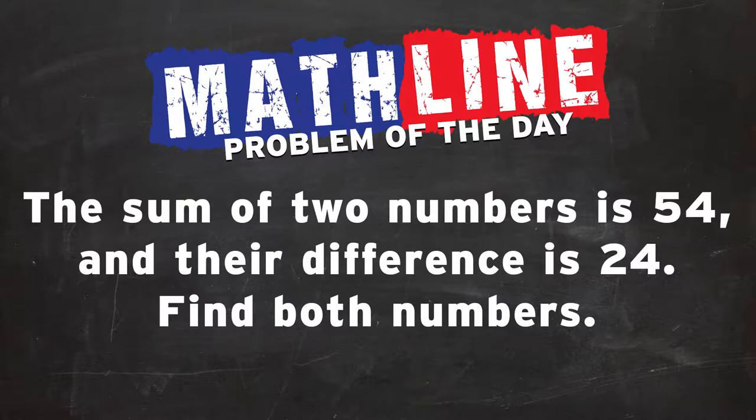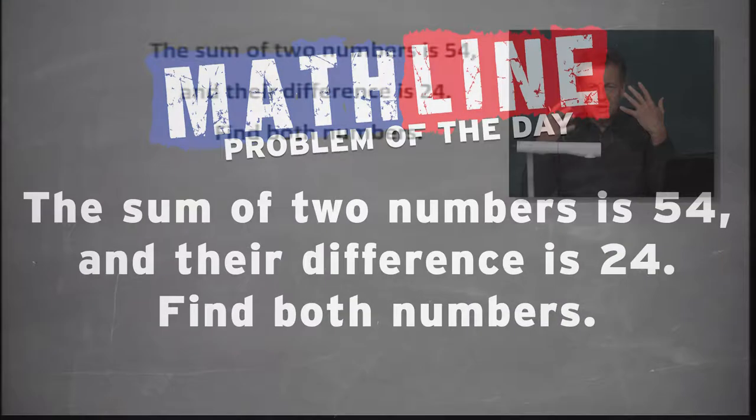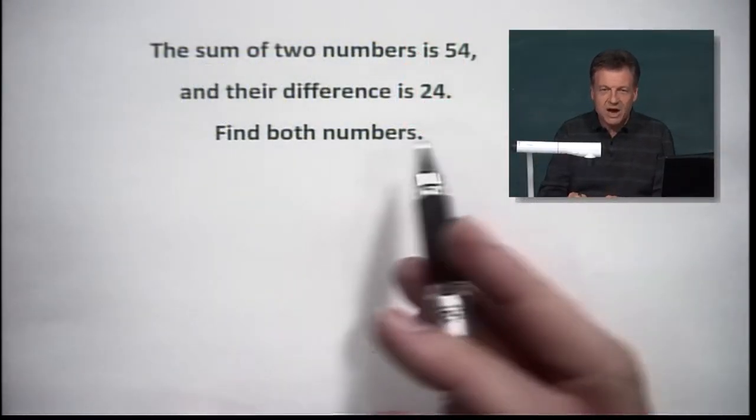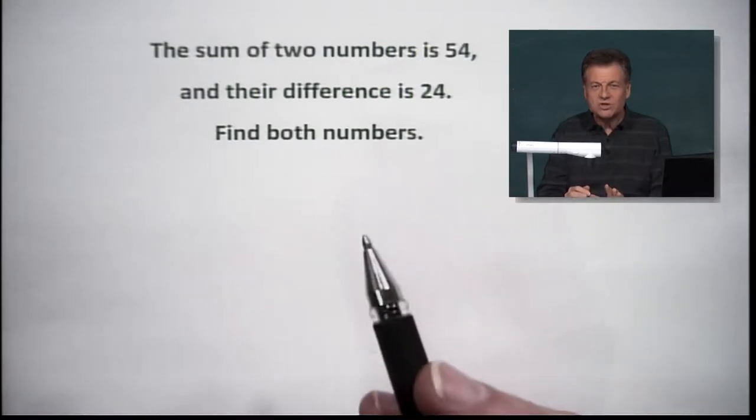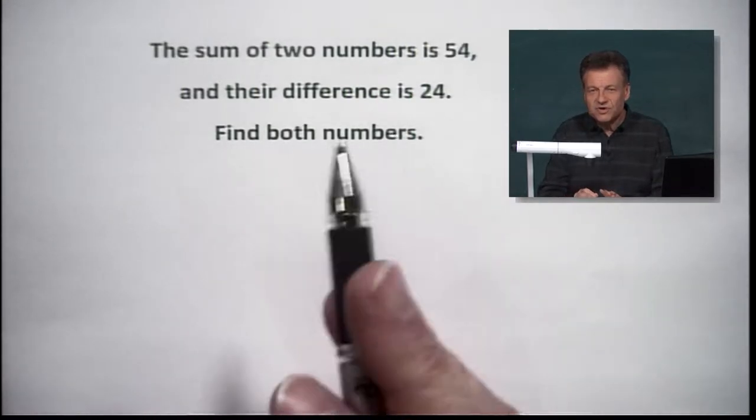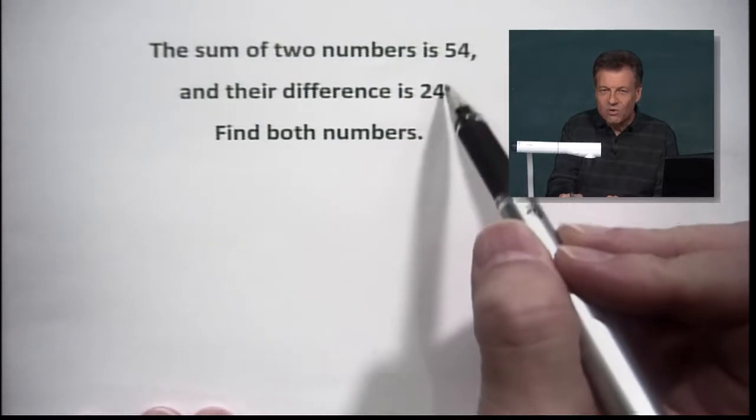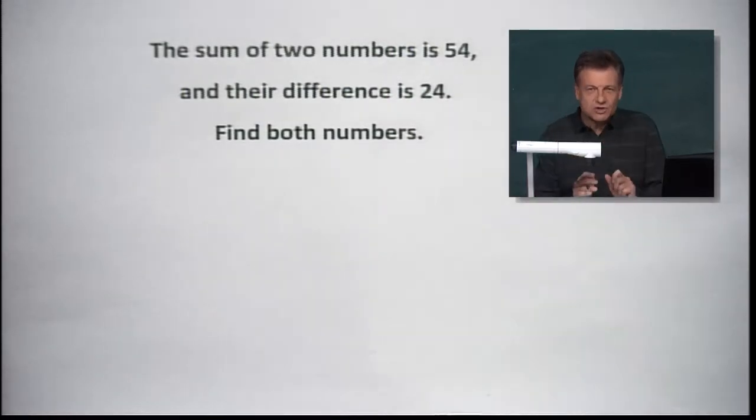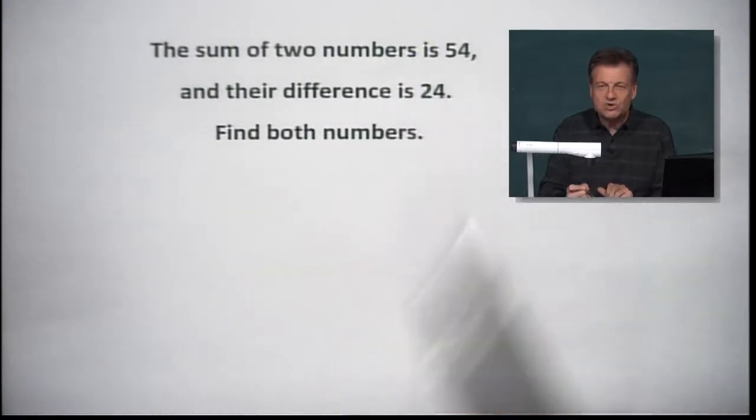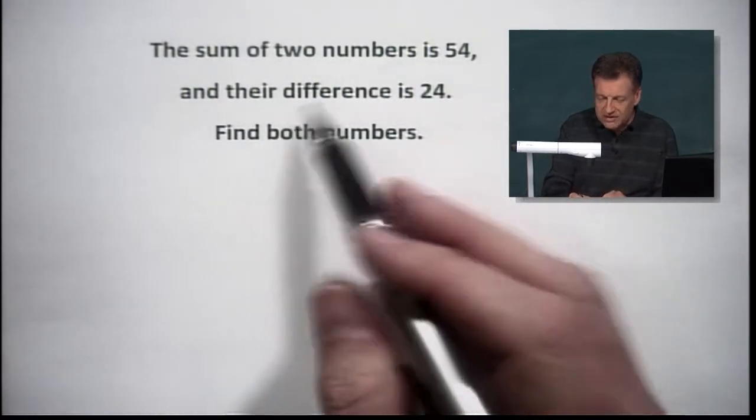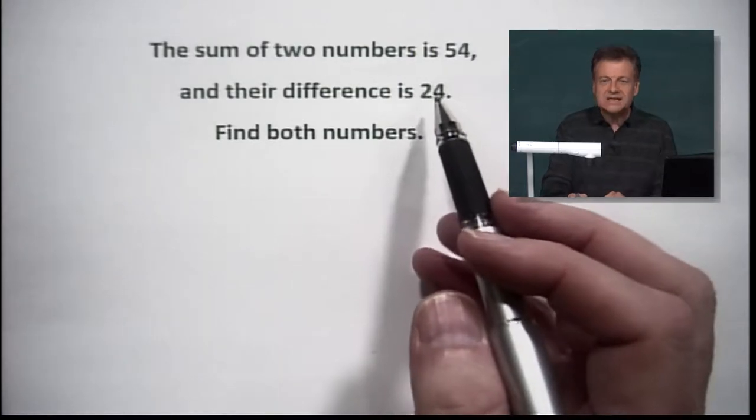So let's talk this one through. Sometimes we can play with these numbers and think about where they're going to go. But first of all, if you look, we have two numbers that are important: 54 and 24. Now, those aren't the two numbers we're getting. But the two numbers work together to give us 54, and they also work together in a different way to give us 24.